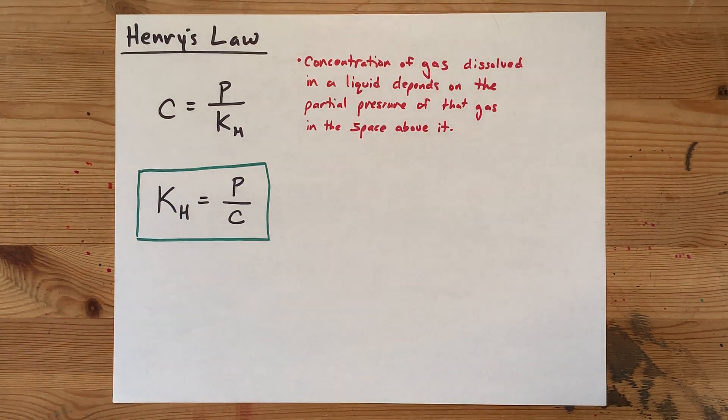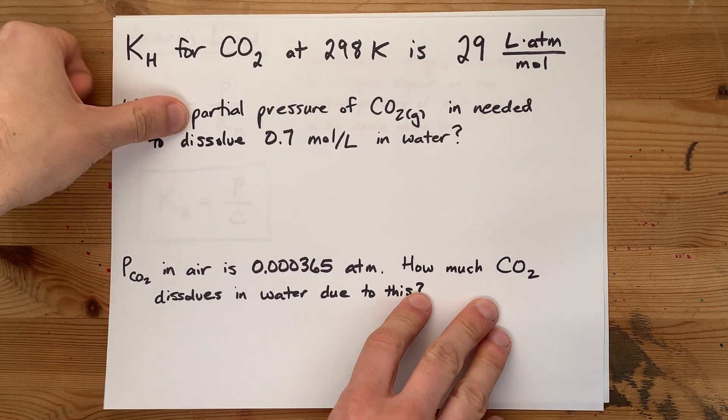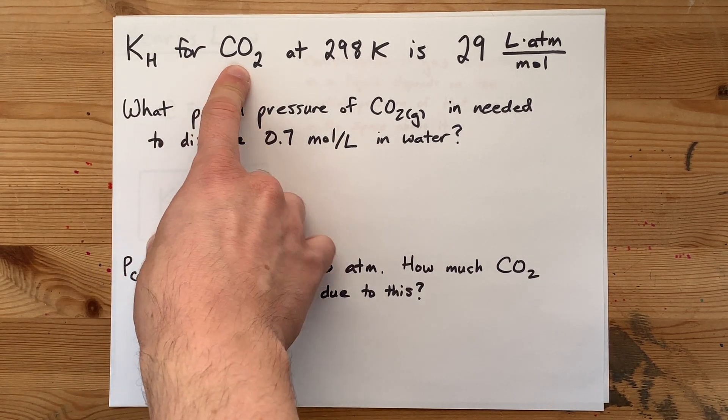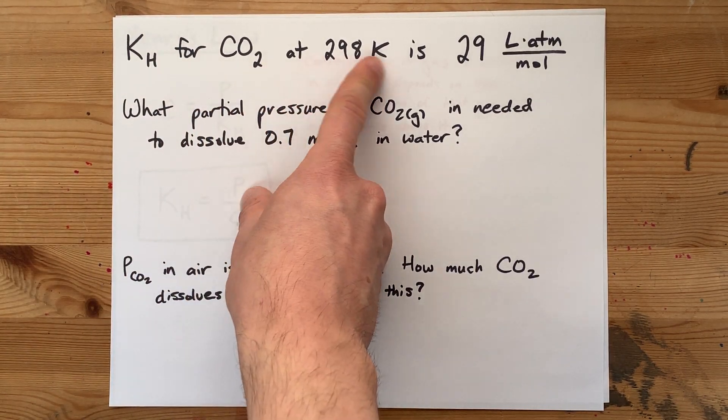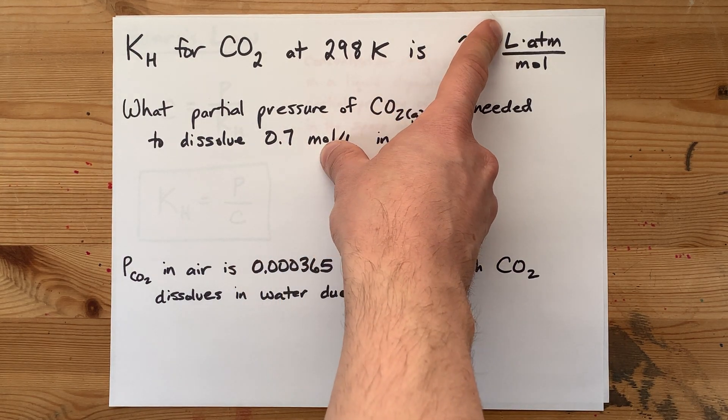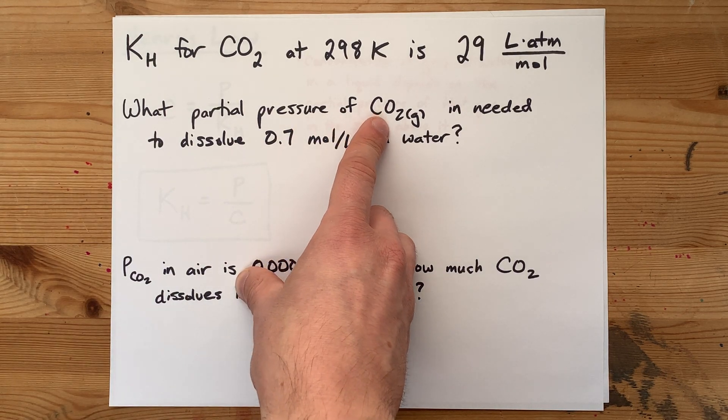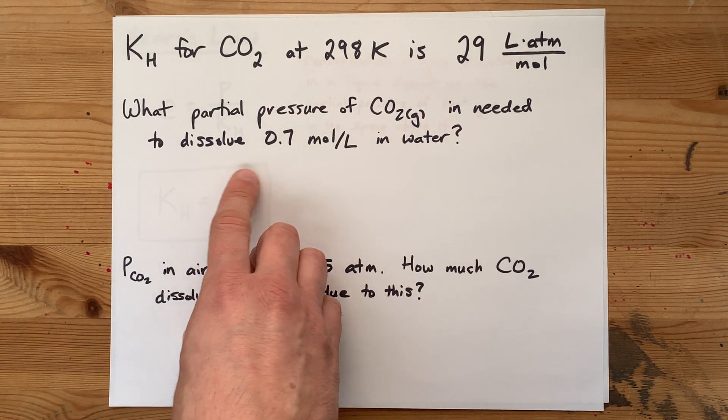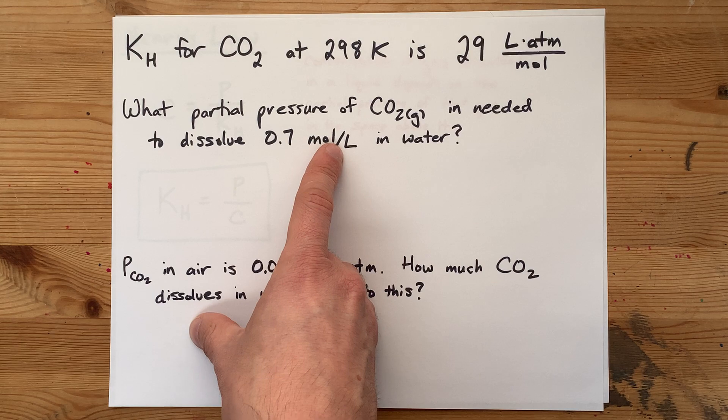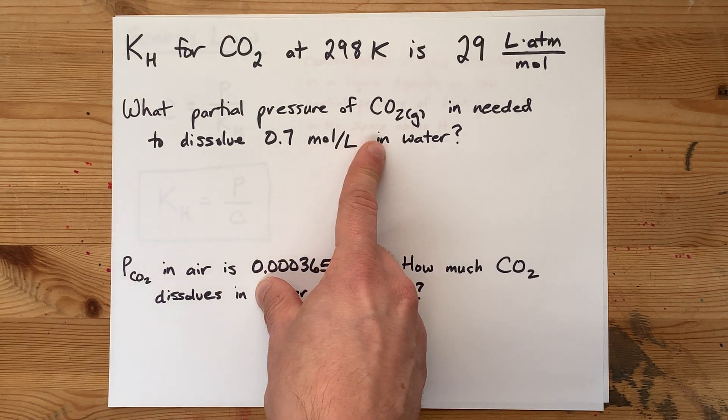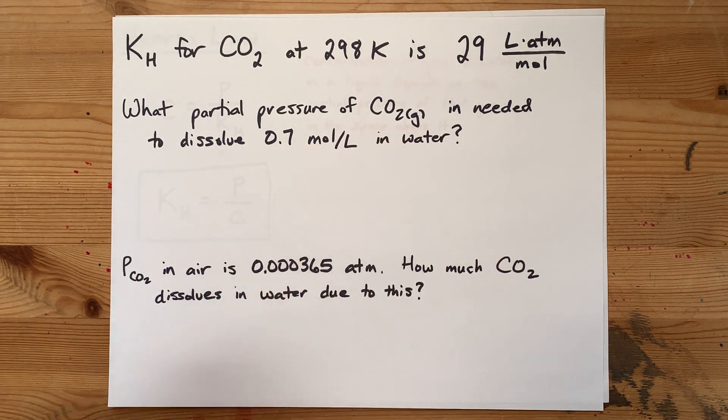Let's do a couple practice questions here. If the KH for carbon dioxide at room temperature is 29 liters atmospheres per mole, what is the partial pressure of carbon dioxide that you need to dissolve a whole 0.7 moles per liter of carbon dioxide into the water?